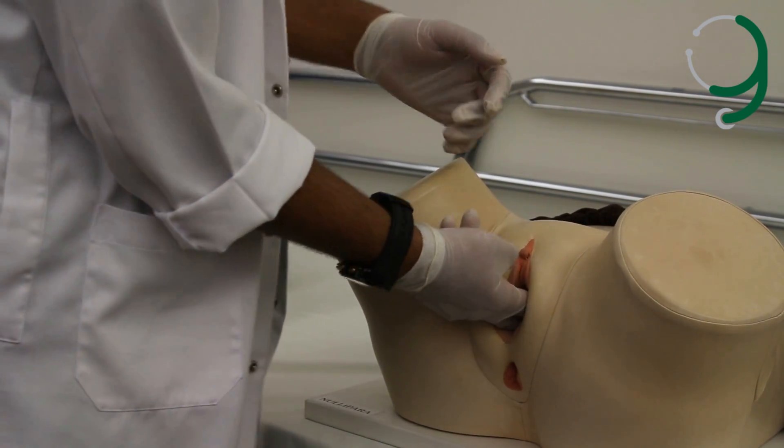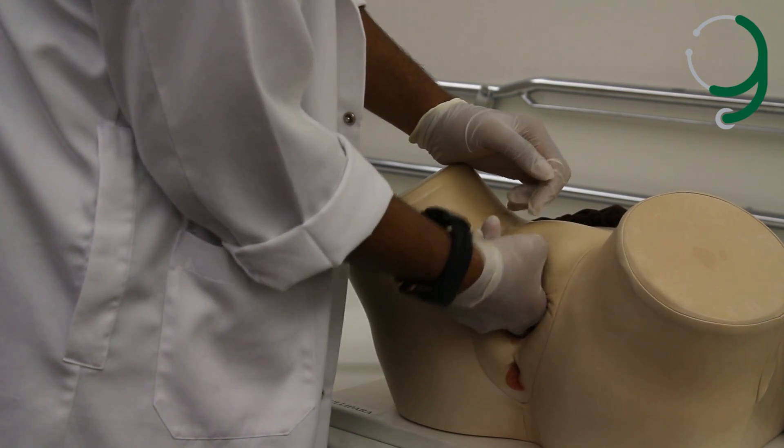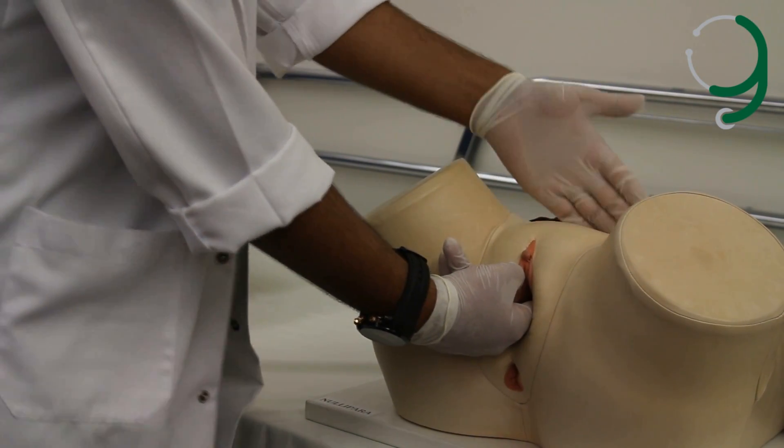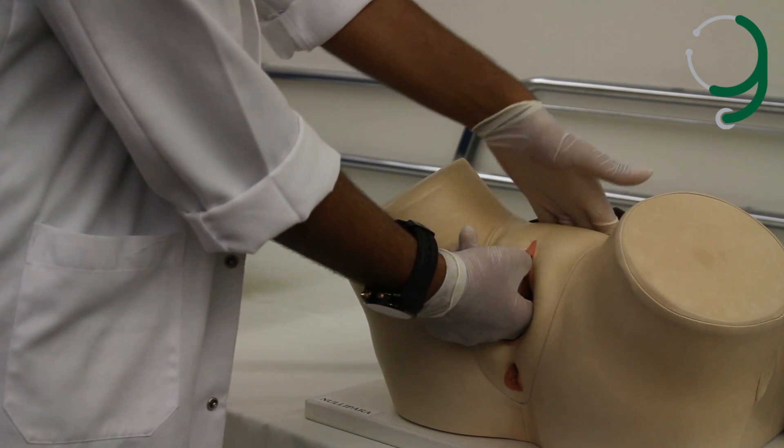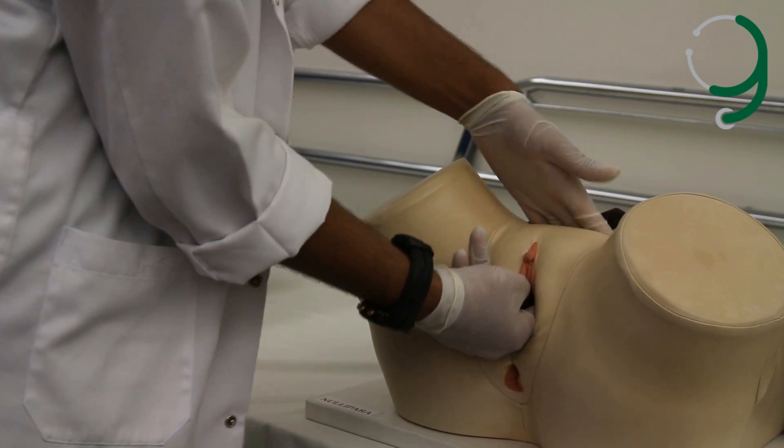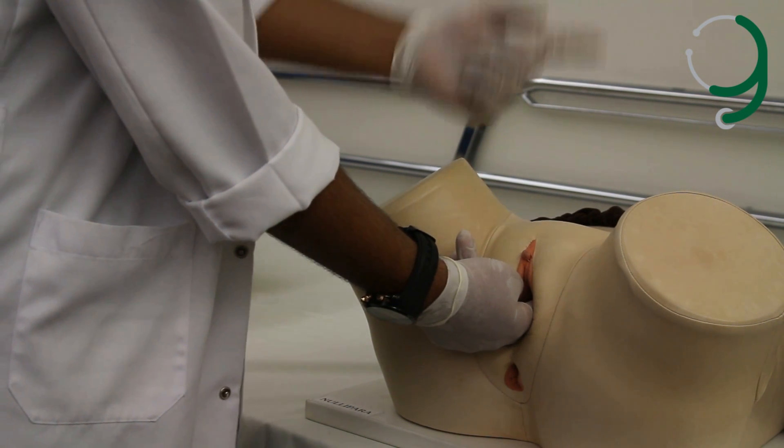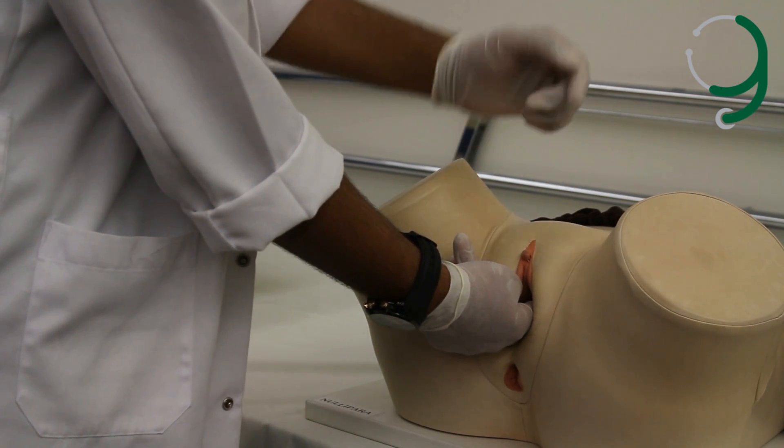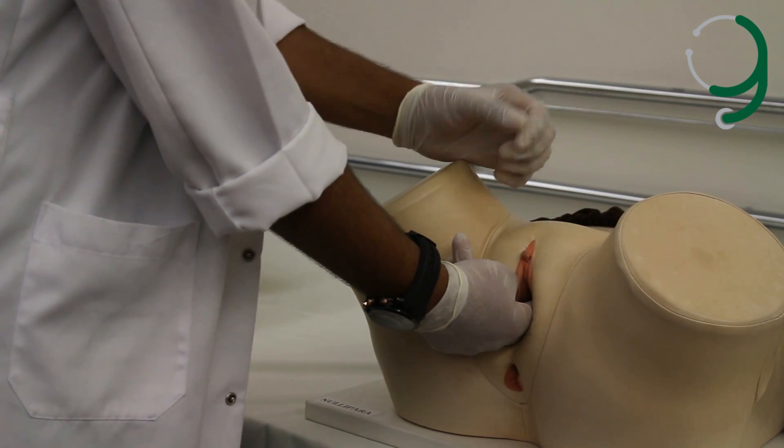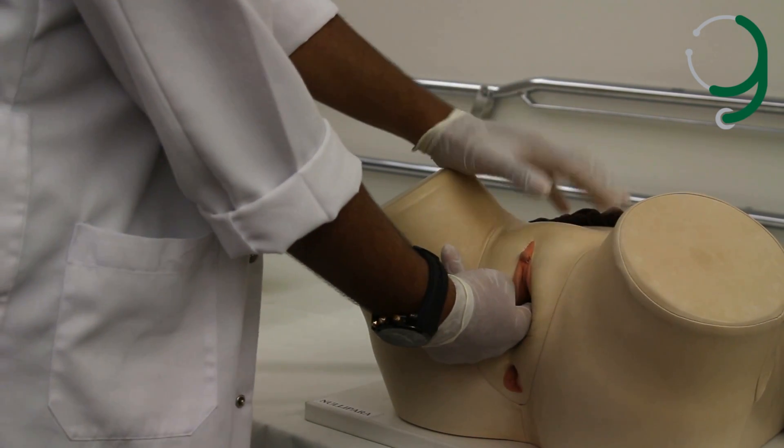Next, you check for the uterus. To check for the uterus, go posterior to the cervix, into the vaginal fornix. With your other hand, put it between the umbilicus and the symphysis pubis. Apply pressure and move your vaginal finger upwards. You should feel the uterus. When you feel the uterus, you should comment on four things: its size, mobility, position, and tenderness. The size should be about a small orange. It should be mobile and it shouldn't be tender. The position should be anteflexed in most women, in the vast majority of women.